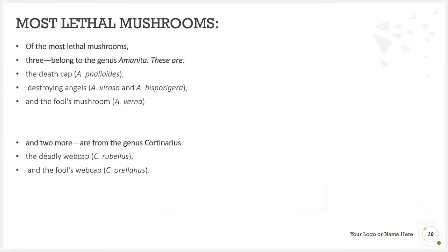The most lethal mushrooms can cause death if not treated properly and immediately. Of these, three belong to the genus Amanita: the death cap (Amanita phalloides), destroying angels (Amanita virosa and Amanita bisporigera), and the fool's mushroom (Amanita verna). Two more belong to the genus Cortinarius: Cortinarius rubellus and Cortinarius orellanus.